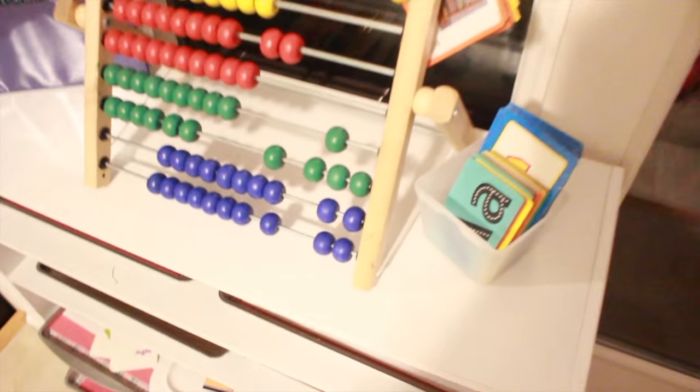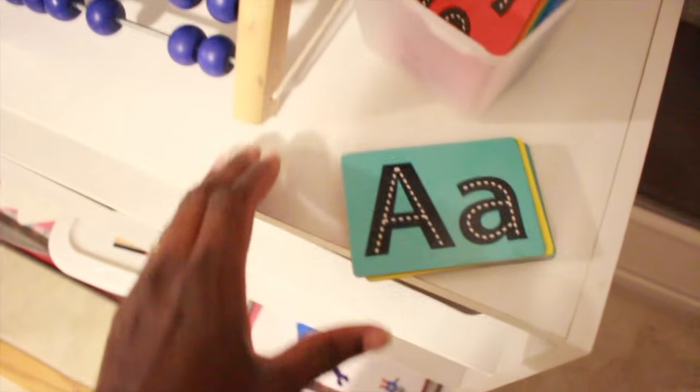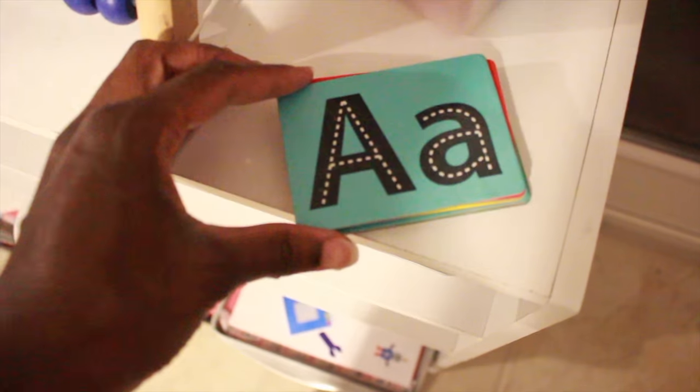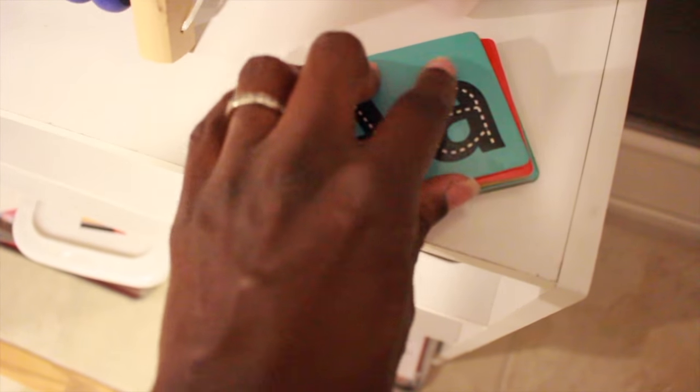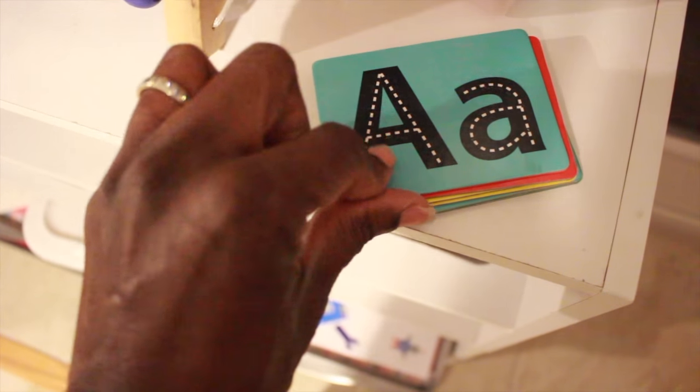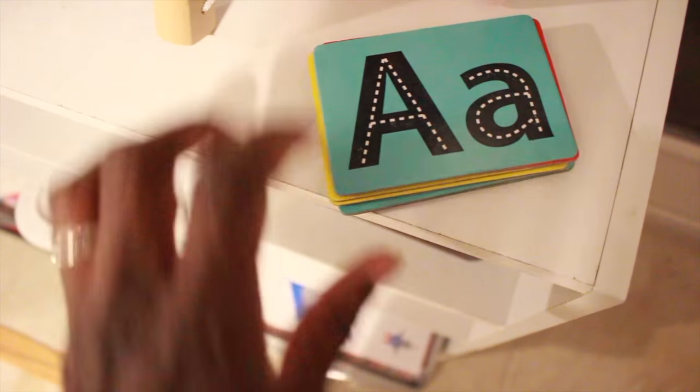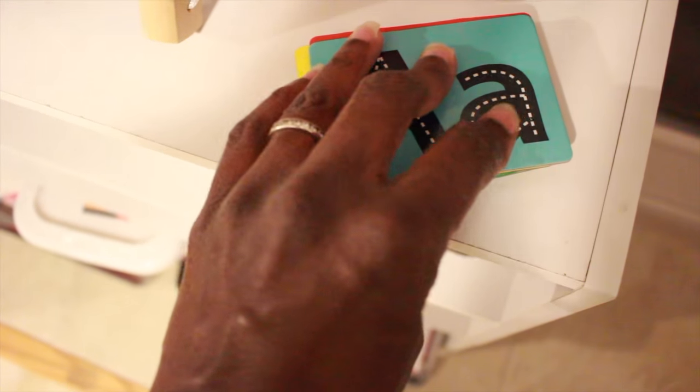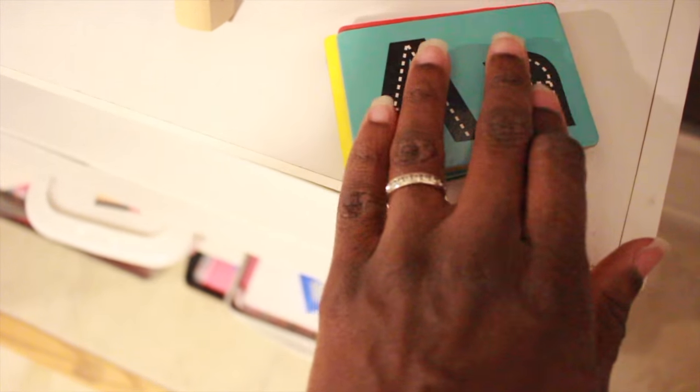Up here I have some of these cards. I got these from the Target dollar spot. They were a dollar and they came with a piece of chalk as well, which is in here somewhere. He already split it in half, but pretty much he loved doing this because he was able to trace over the letters. This is actually a cardboard surface and it's like a sandpaper surface as well.